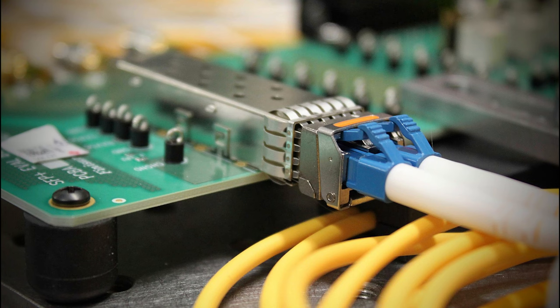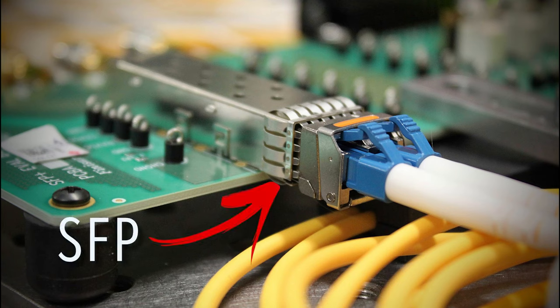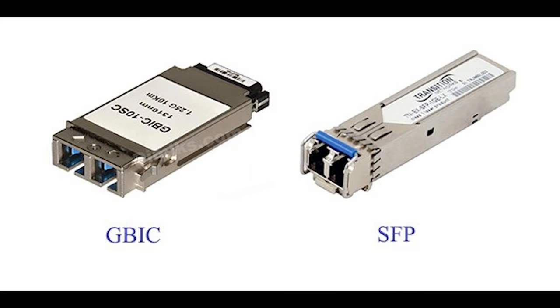Now let's talk transceivers and media converters. On routers, small form factor pluggable modules (SFP) and gigabit interface converter modules (GBIC) are often used to link a gigabit Ethernet port with a fiber network. Both SFP and GBICs exist for technologies other than fiber, but connecting to fiber has become most common. With either SFP or GBIC, there is a receiver port and a transmitter port. These devices are static sensitive as well as dust sensitive, and dirty connectors can cause intermittent problems.